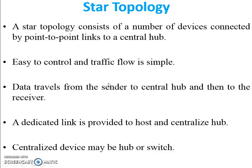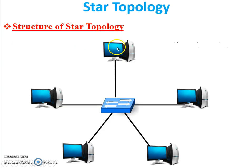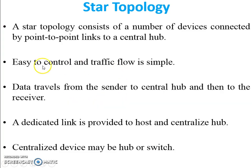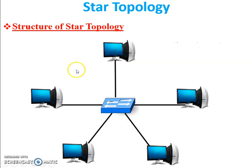The functionality of star topology: a star topology consists of a number of devices connected by point-to-point links to a central hub. As you can see, all devices are connected to the central hub or switch with point-to-point connections. It is easy to control and traffic flow is simple. The sender sends data, and the receiver can easily receive it through the centralized device.